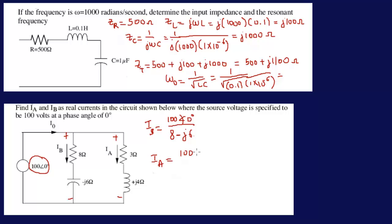And then IA is still the same thing, 100 at zero degrees over 3 plus j4. So I just wanted to show you how to put it in your calculator and you can do it from there. I just wanted to show you how to convert impedances and that's it. There's nothing else here.